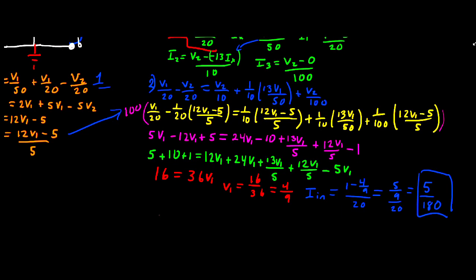So now, in order to find our input resistance, we said that RN is equal to VIN divided by IN, and we said VIN to be 1 volt. So now we know that 1 volt divided by IN is equal to our resistance. So plugging in our value of IN, we get that RN is equal to 180 divided by 5, and that is equal to 36, and 36 ohms is the answer to this problem.